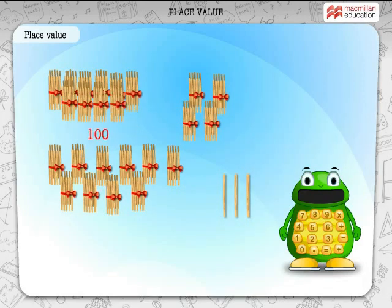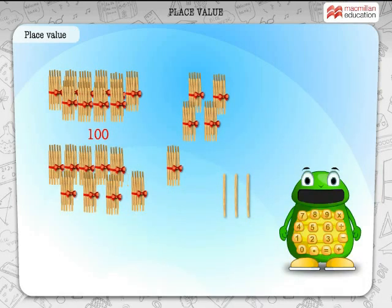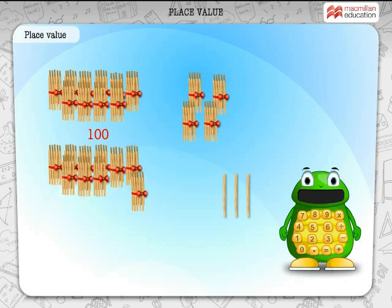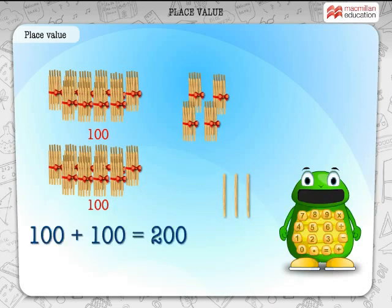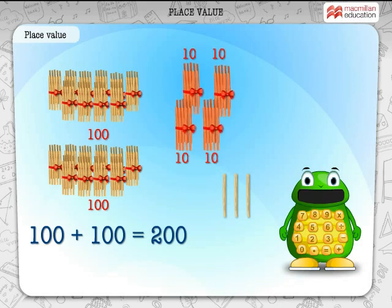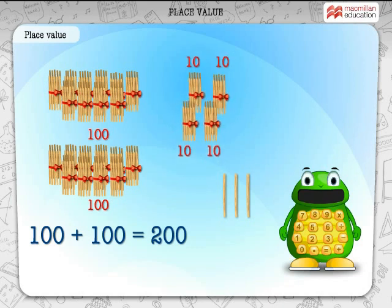That makes 100. Let us see if we can make another set of 100. 10, 20, 30, 40, 50, 60, 70, 80, 90, 100. That makes 200. Count the remaining tens — there are four tens. And then count the ones — there are three ones.